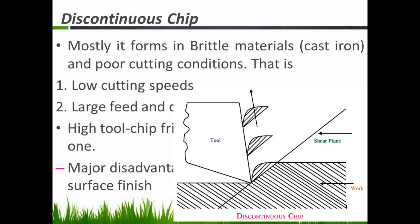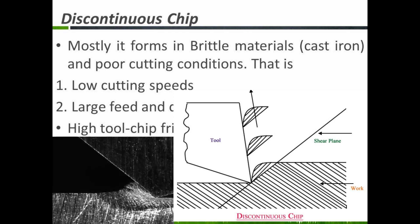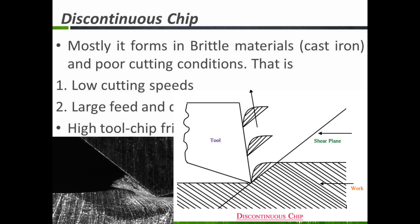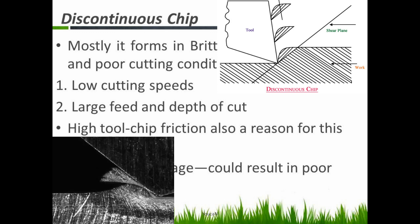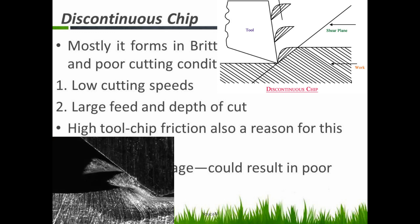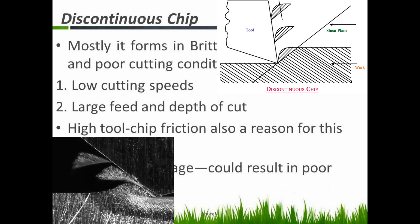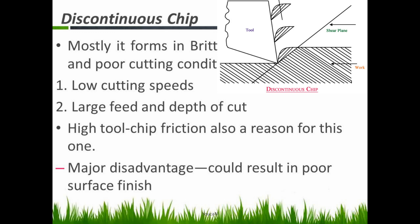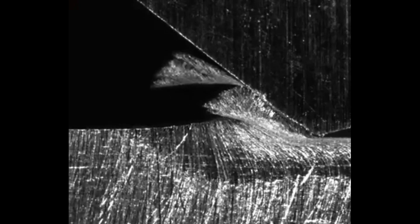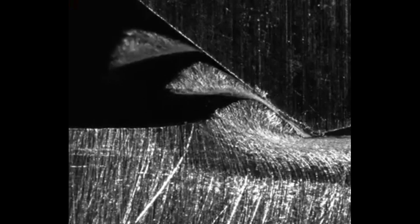Number one: discontinuous chip. It forms in brittle materials, such as cast iron. Also, if we have poor cutting conditions, discontinuous chips can form in ductile materials as well — at very low cutting speed, large feed, and depth of cut. Sometimes there will be high tool-chip friction, which is also an important reason for discontinuous chips. The disadvantage is it will produce a poor surface finish.